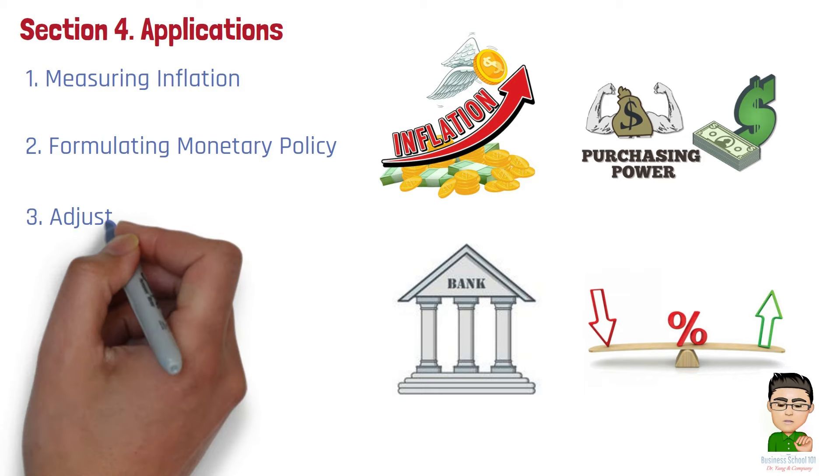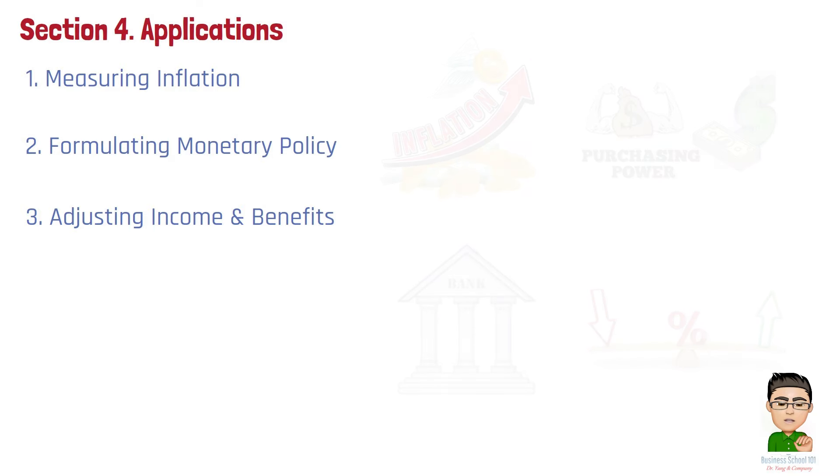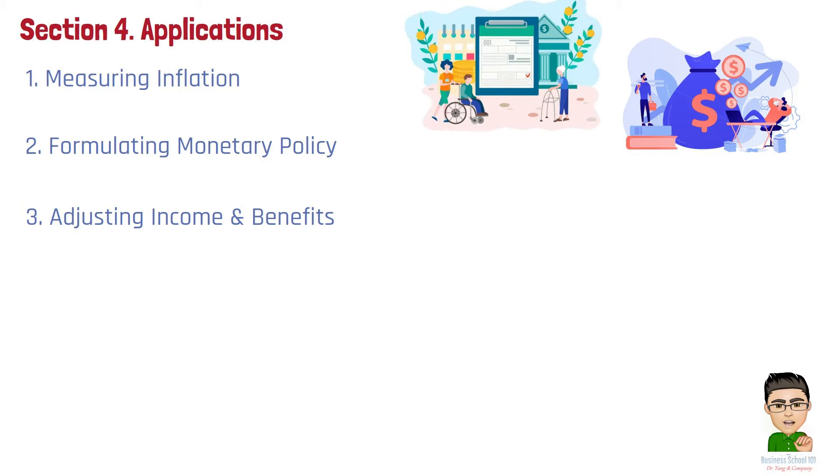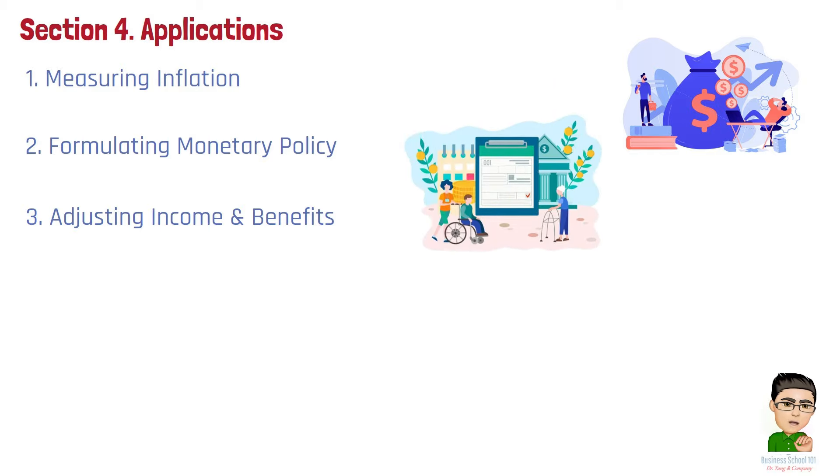Number 3. Adjusting income and benefits. CPI is used to adjust wages, pensions, and social security payments for inflation. This ensures that the real value of these payments is maintained, allowing individuals to maintain their standard of living despite rising prices.